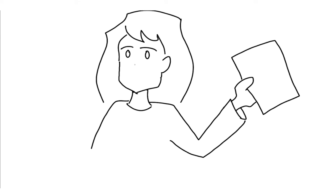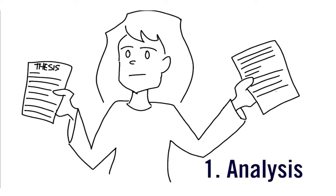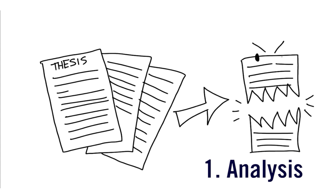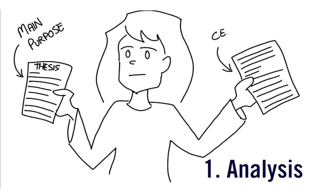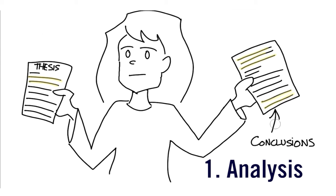Let's start by exploring what it means to write critically. Once you know the article, case study, or medium that you're going to be critiquing, you'll typically start a two-part process. Step number one: analysis. This is where you examine and break up the information into parts. You want to identify the main purpose, central claims, and conclusions, and find systematic answers that the article is trying to present. You're not just reading to pick out information — you're trying to make judgments about how this material is argued.